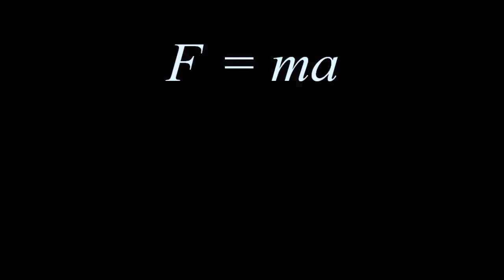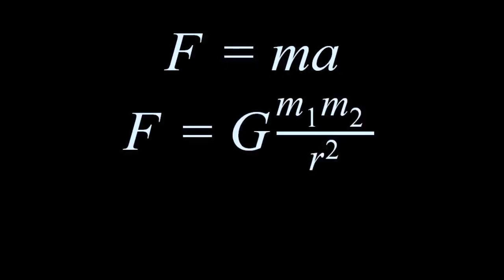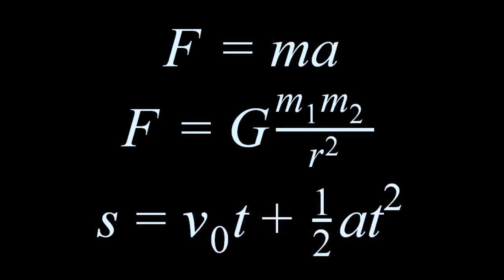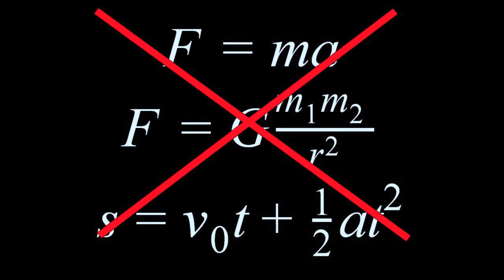I really hope that you've had some introductory physics courses, because it is an experience that must be done at least once in your life. The problem, though, is that those equations that they teach you are actually wrong. Those equations are extremely useful, and they're probably all that you will ever need, but they're only approximations when traveling at slow speeds — slow compared to the speed of light.